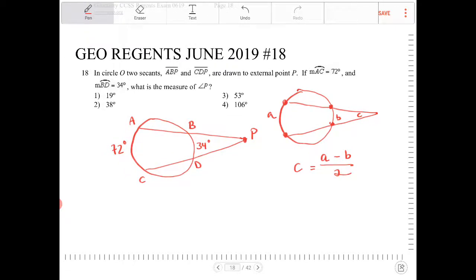So here, what we're going to do for angle P, this is going to be 72 minus 34 divided by 2.